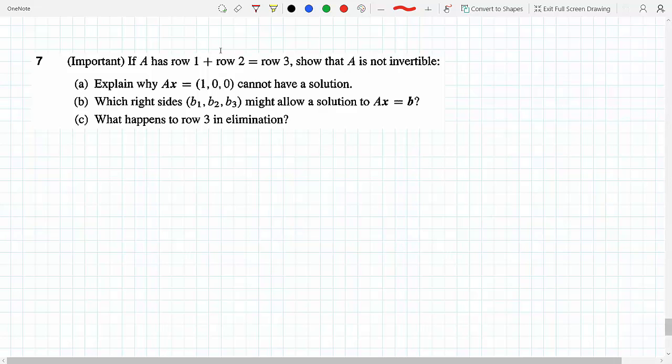We need to prove that if you add row 1 to row 2 and get row 3, then A does not have an inverse. Let's start with A. He's kind of walking you through the problem.